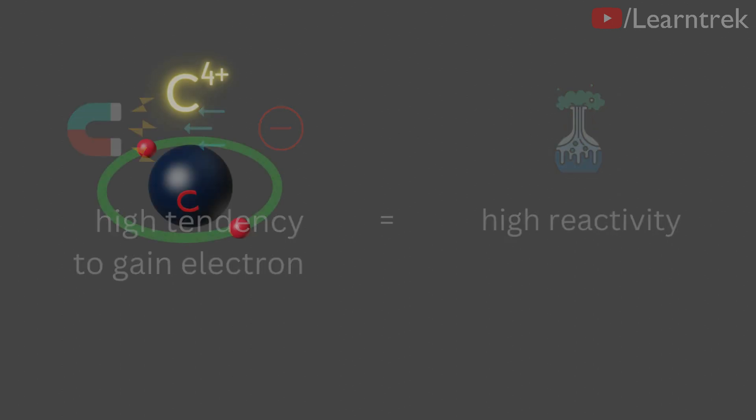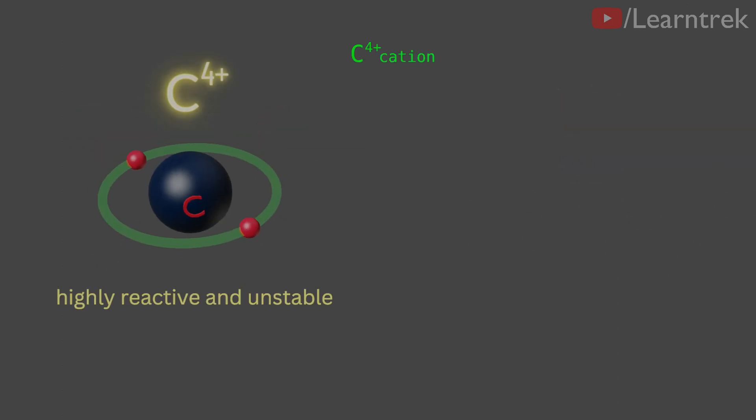Hence, C4-positive cation will be highly reactive and very unstable in nature. For that reason, carbon C4-positive cation is not possible.